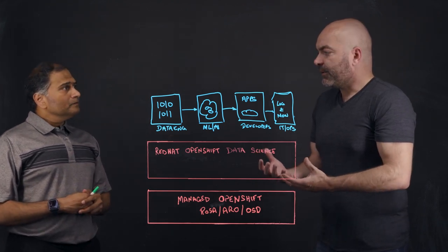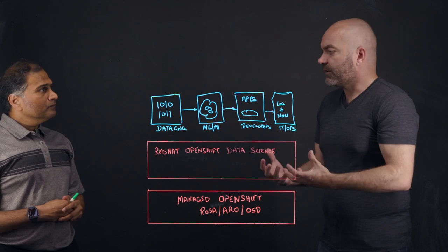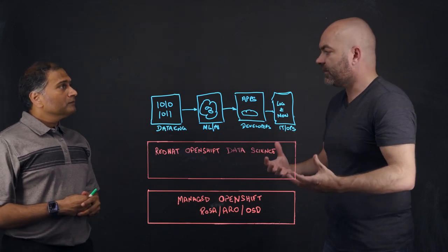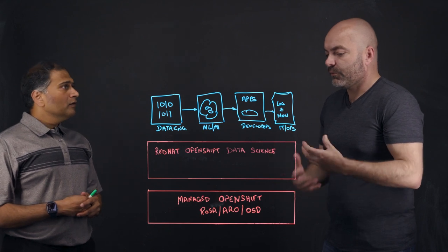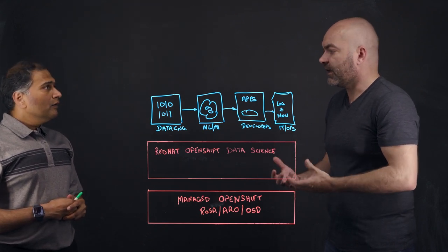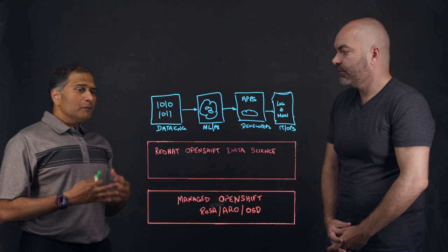For a lot of the IT ops people that I talk to, hardware is a concern because GPU instances, for instance, in your cloud providers are very expensive. How can OpenShift and OpenShift Data Science help from that IT ops perspective?